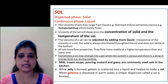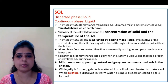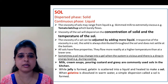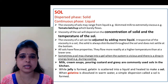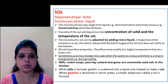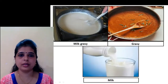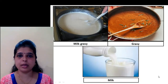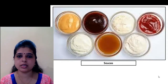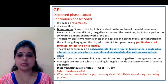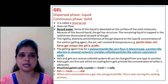That is the example of jelly. Jelly ko agar aap heat karoge, that will convert into sol. But agar aap isko cool karoge, that will convert into a jelly. Other examples of sol are milk, gravy — these we use in our day-to-day life. Sauces are also an example of the sol colloidal system.